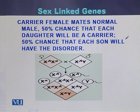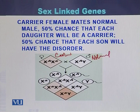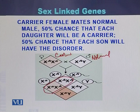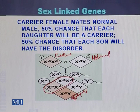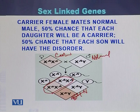In another example, a carrier female mates with a normal male. There will be a 50 percent chance that each daughter will be a carrier, and a 50 percent chance that each son will carry the disease and be affected. So in this cross, daughters will be carriers while sons will be affected.